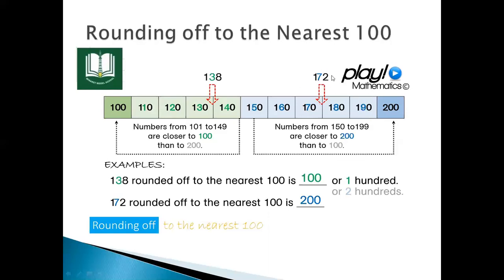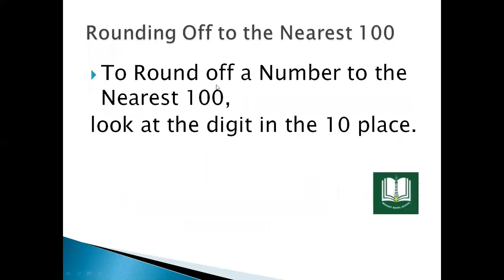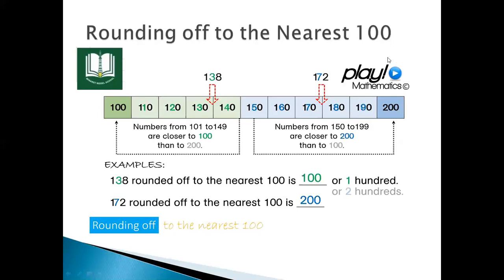For the next example, 172: first of all, check the tens place. We look at which number is in the tens place. If the tens place digit is less than 5, then it rounds down. Here the number 172 is nearest to 200 because numbers from 150 to 199 round up to 200.